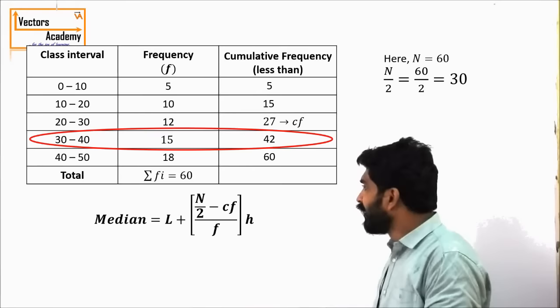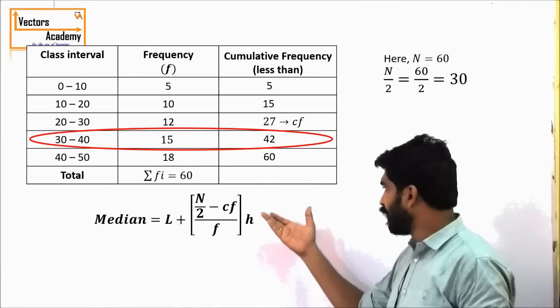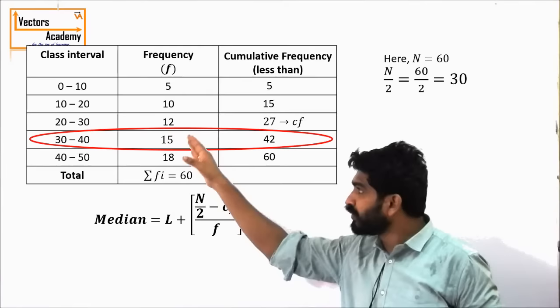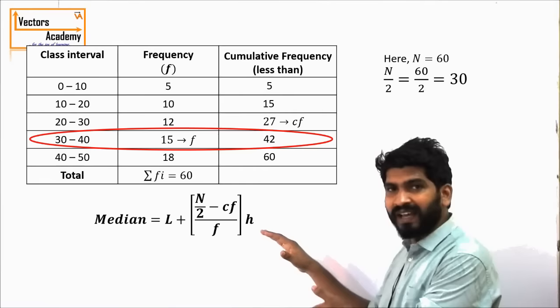F is the frequency of the median class, which is 15. H is the class width — you can see the width of the class is 10 units: 0 to 10, 10 to 20, and so on, so the class width is 10. We substitute all these values into the formula and we get the median as 32.